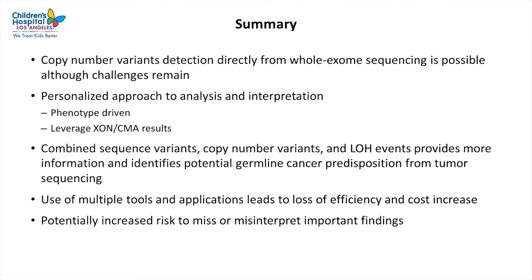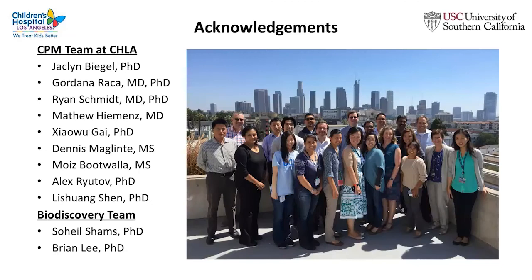In summary: CNV detection directly from whole exome sequencing is definitely possible, although challenges remain. We propose a personalized approach to analysis and interpretation. Combined sequence variants, copy number variants, and loss of heterozygosity events can provide more information and can potentially identify germline cancer predisposition from tumor sequencing. The use of multiple tools and applications leads to loss of efficiency, cost increase, and an increased risk to miss or misinterpret important findings. I would like to acknowledge our team at CHLA as well as the Biodiscovery team.